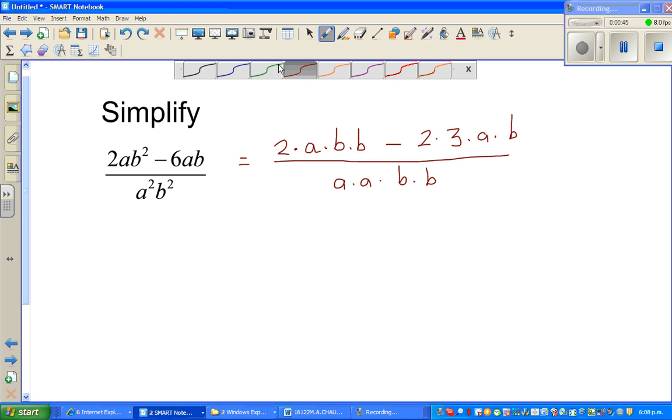I will circle the numbers and the letters which are common. So I can see a 2 common here, I can see a 2 common here, I can see an a and an a here, and a b and a b here.